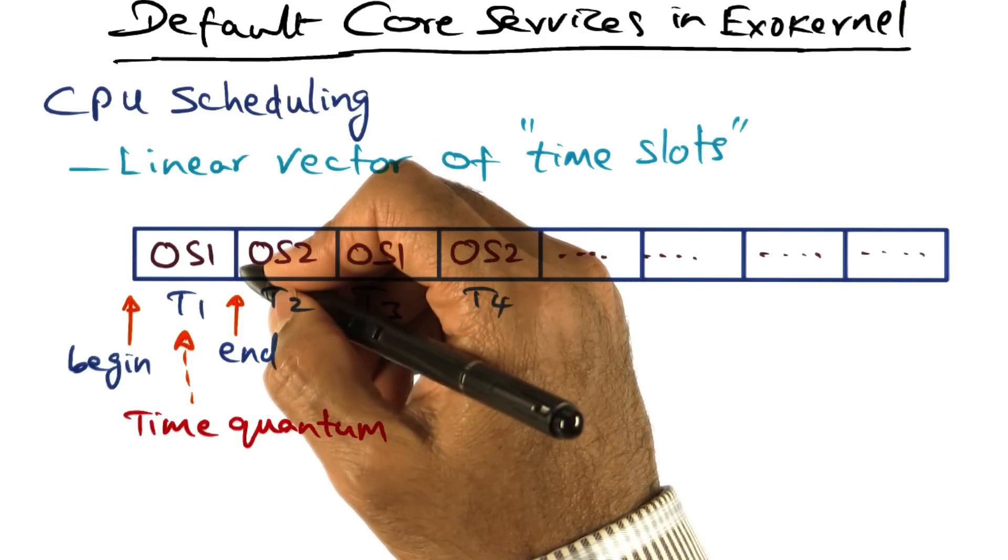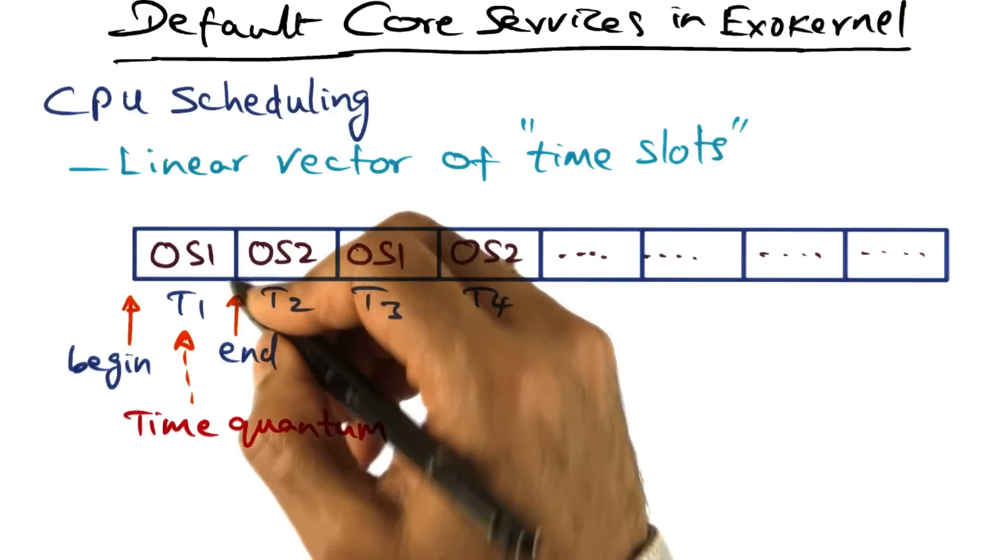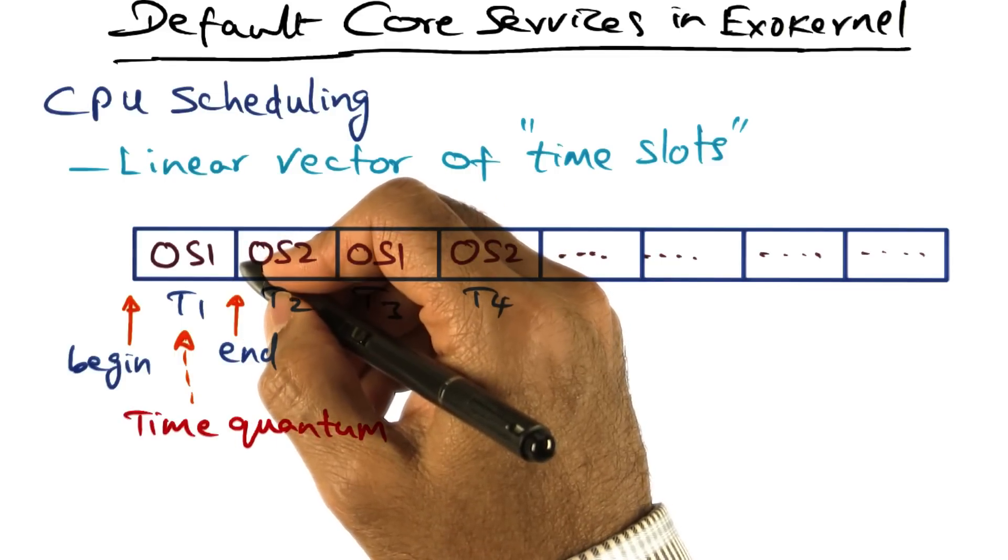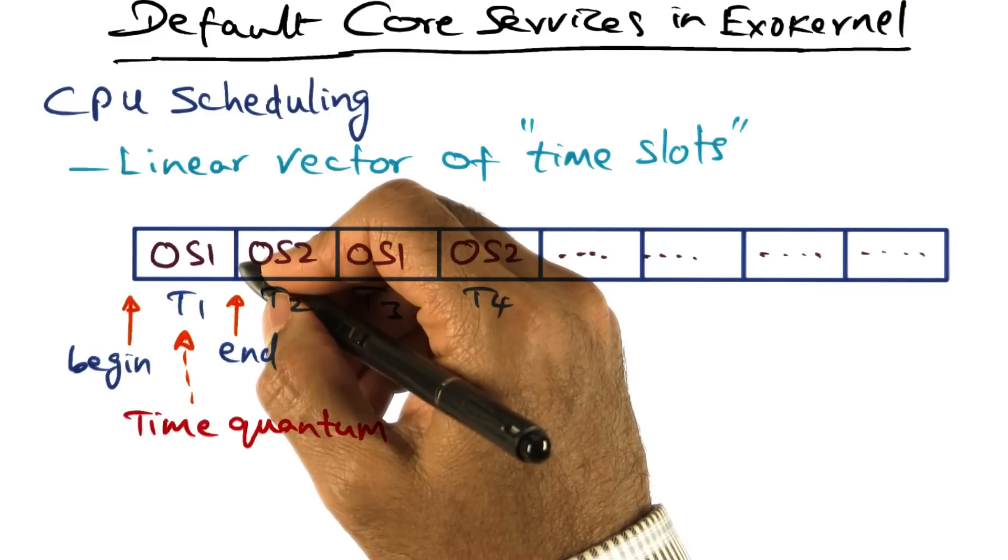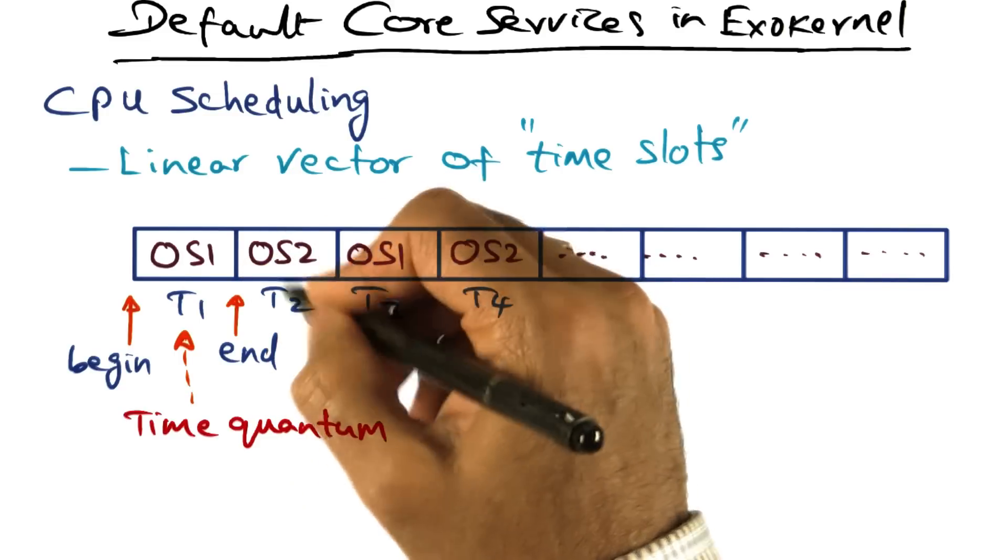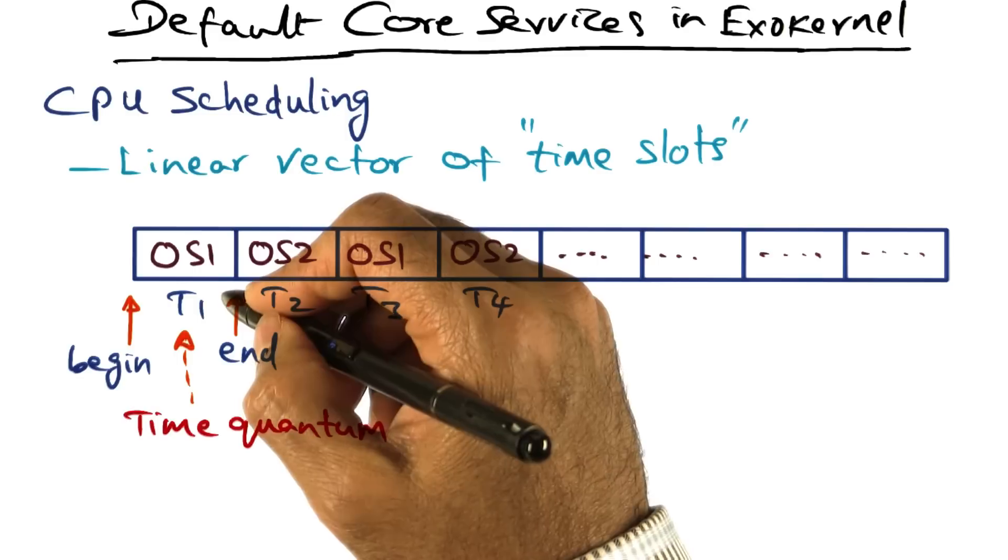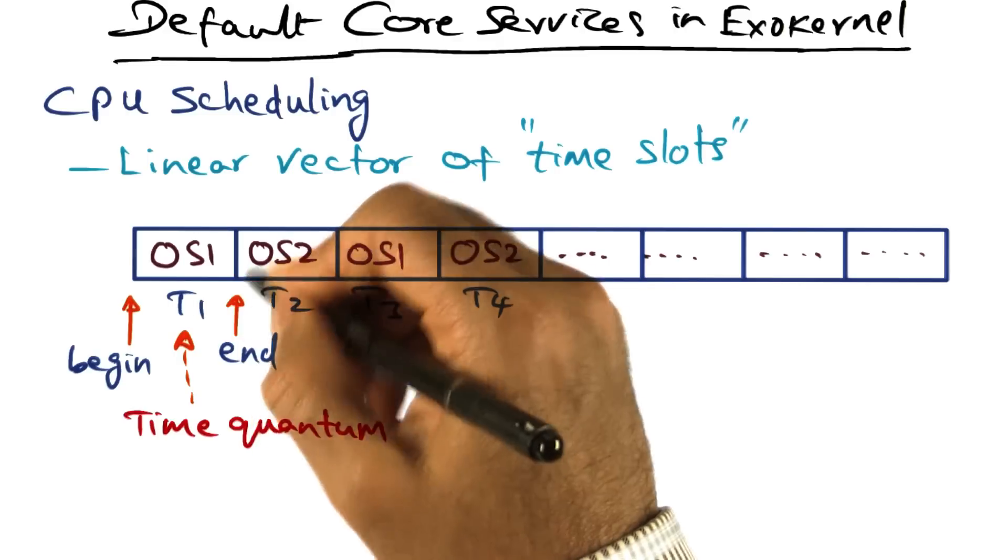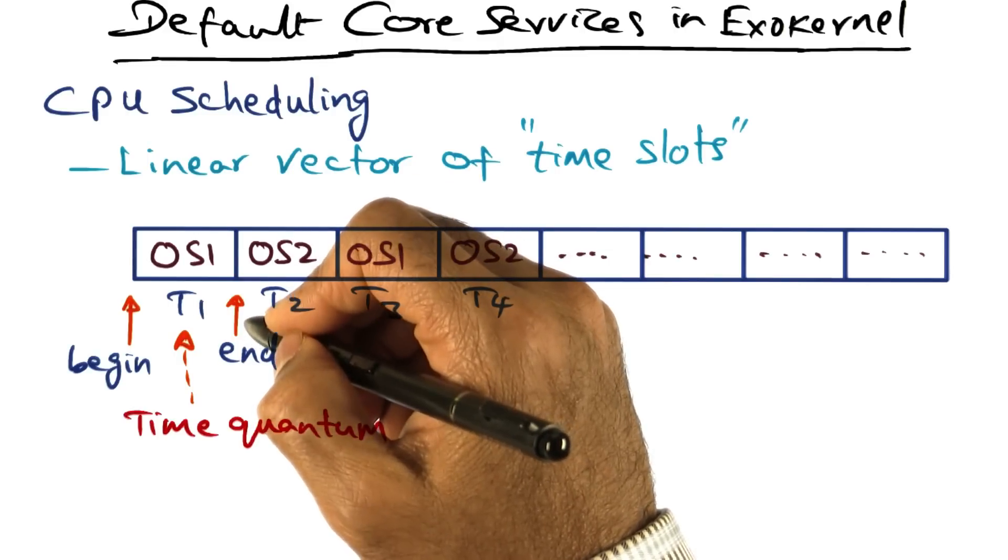If an operating system misbehaves, let's say that OS1 when exo-kernel says it's time for you to save your context and give back the processor to me so that I can schedule it for some other operating system, and let's say OS1 takes more time than it is allowed to at the point of this context switch. In that case, what will happen is exo-kernel will remember that OS1 misbehaved.